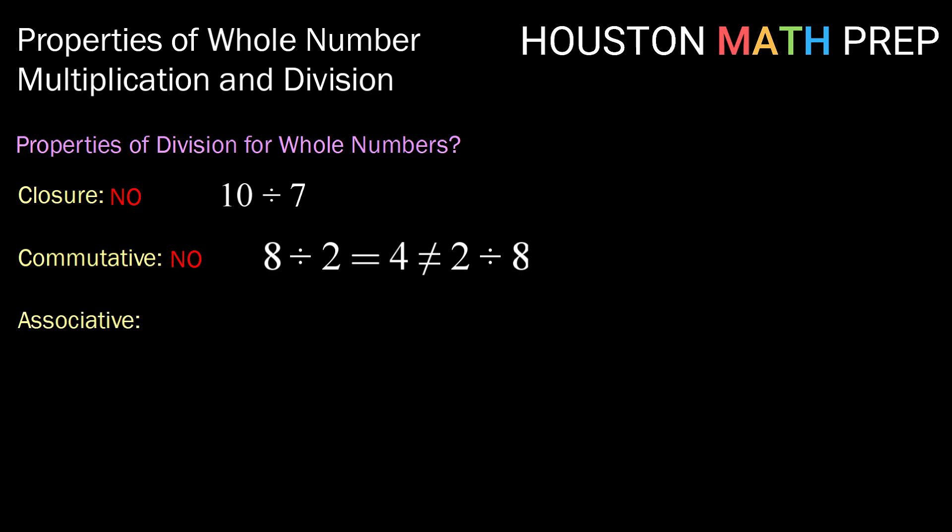What about associative? This one covers regrouping. If we think about 8 divided by 4 divided by 2: if we first group 8 divided by 4 and then divide by 2, that results in the number 1. If instead we group 4 and 2 first, then we get 8 divided by 2, which is 4. Those are not equivalent, so division is not associative on the whole numbers.